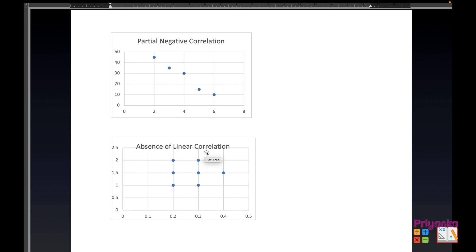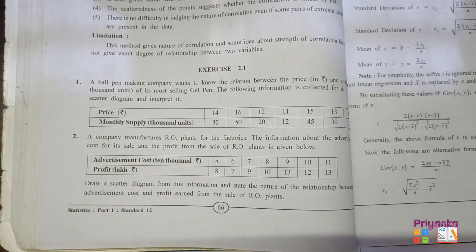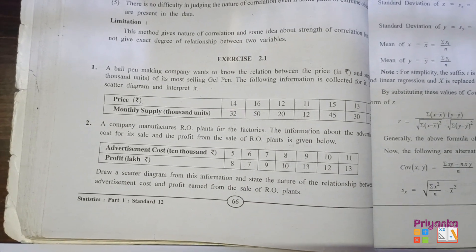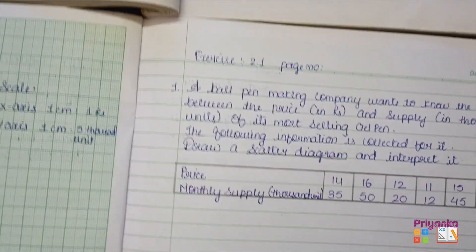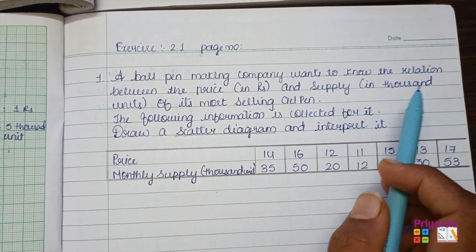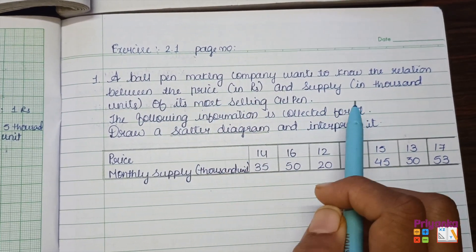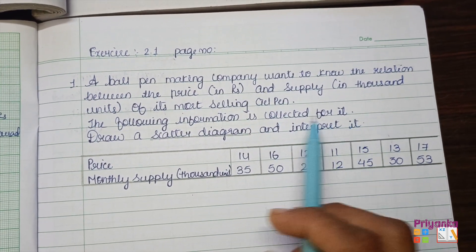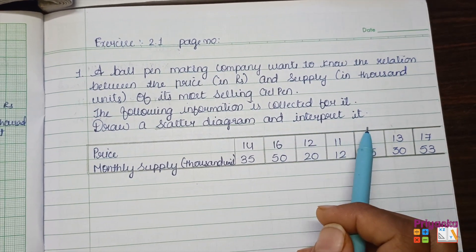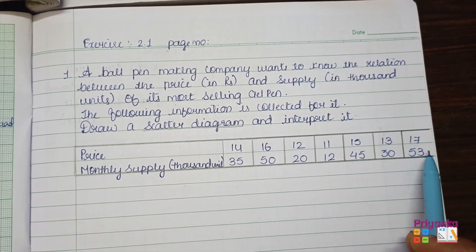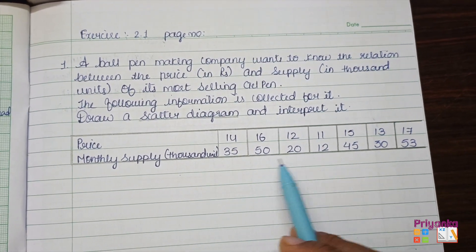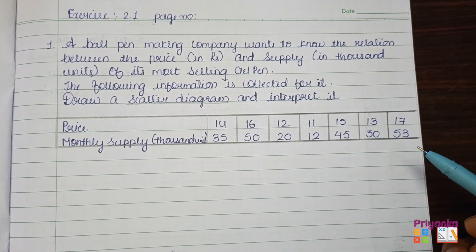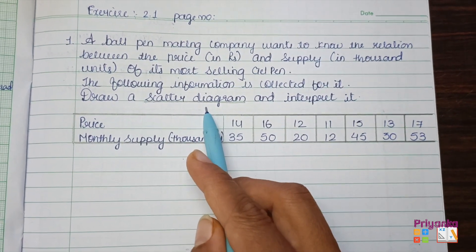Standard 12th, Chapter 2, Linear Correlation, Exercise 2.1. The first question: a ball pen making company wants to know the relation between the price in rupees and supply in thousand units of its most selling gel pen. The following information is collected — draw a scatter diagram and interpret it. The prices of the ball pen and the monthly supply in thousand units are given, and we are going to draw a scatter diagram.